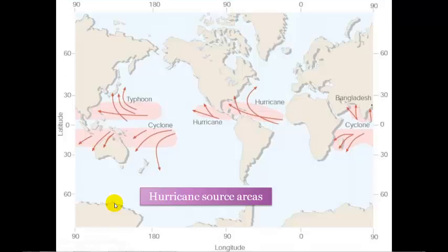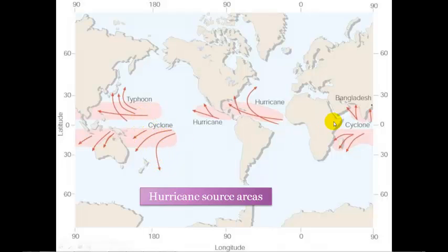Looking at all these conditions together, we can identify source areas where hurricanes are likely to form. We can knock out the area around the equator because the Coriolis effect is not strong enough, but around the equator we have warm sea surface temperatures, moist tropical air, and all other factors in play. The areas shown in pink are the main source areas. In different parts of the world they have different names: where most of our hurricane weather happens we call them hurricanes; in the Pacific closer to Asia they're called typhoons; and in the southern hemisphere they're called cyclones.